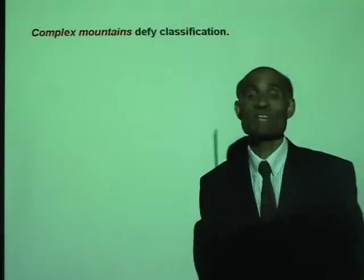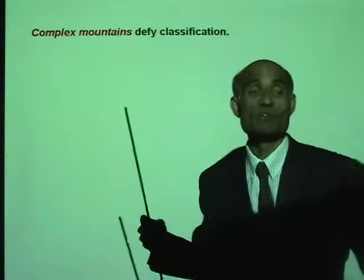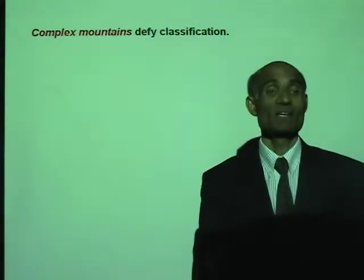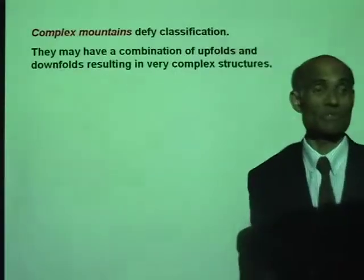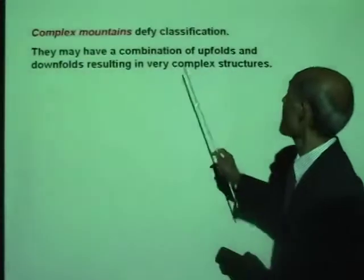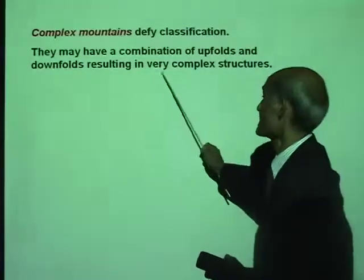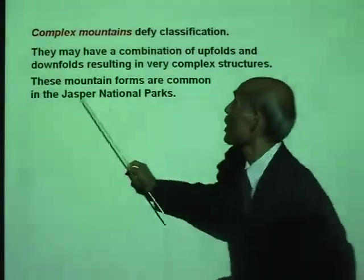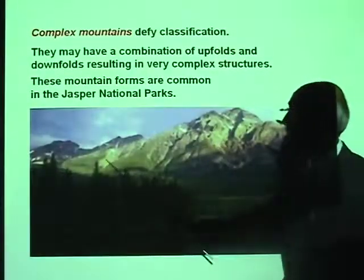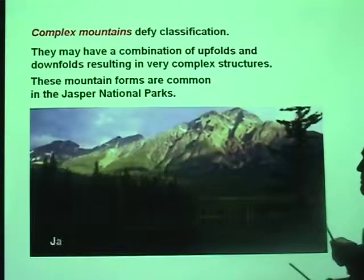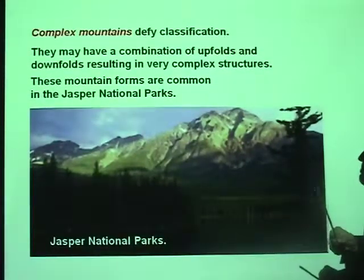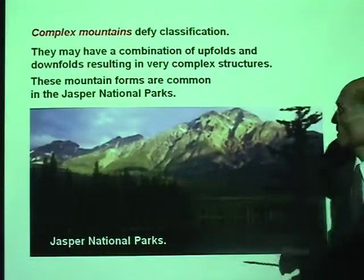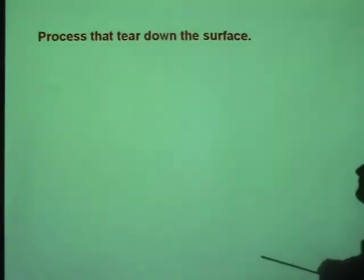Complex mountains are those you cannot classify as erosional, fault block, or volcanic — they defy classification. They may have a combination of uplifts and downfalls resulting in a very complex structure. These mountain forms are common in Jasper National Park. Here is a picture of complex mountains from Jasper National Park — they do not fit into any volcanic, erosional, or fault block type.